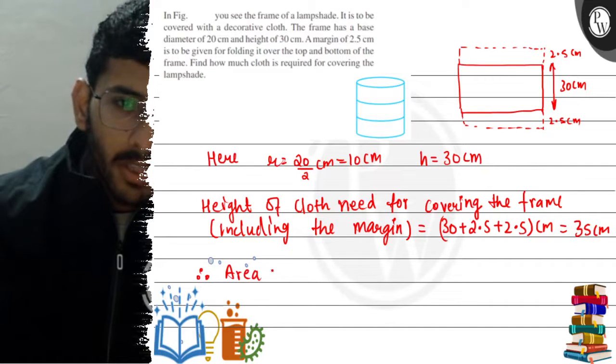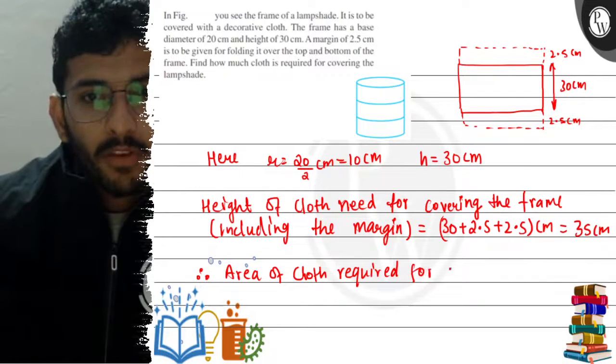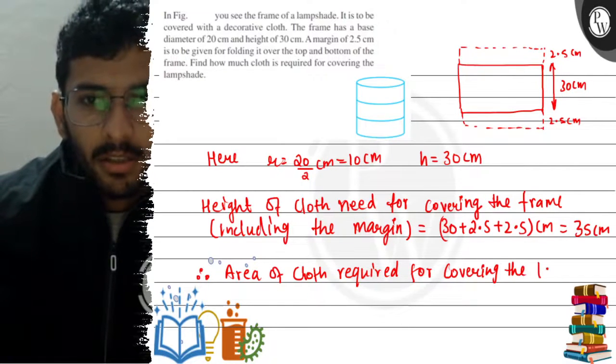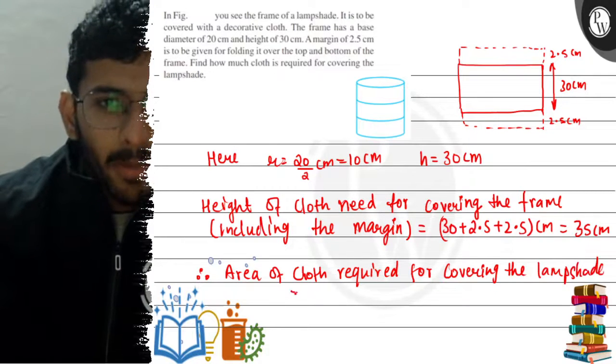Now, the area of cloth required for covering the lampshade—here, we have 2πrh. This is the curved surface area of the cylinder.